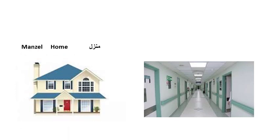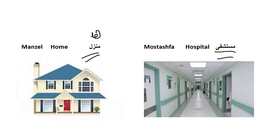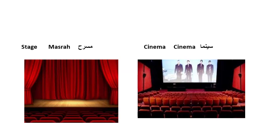What do we mean by 'house' in Arabic? House in Arabic means 'بيت'. The second one — here we see a hospital. Hospital in Arabic is 'مستشفى', which is feminine, so we say 'هذه المستشفى'. 'مستشفى' is feminine, so home is masculine and hospital is feminine in Arabic.